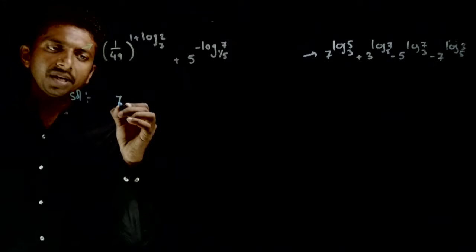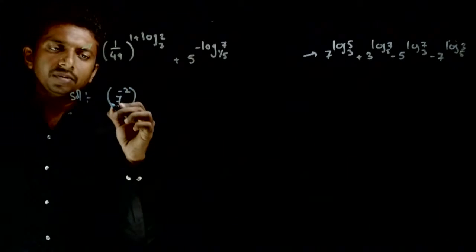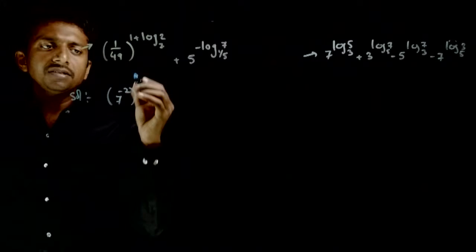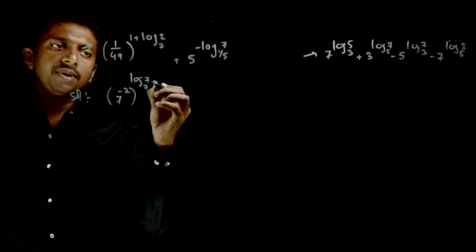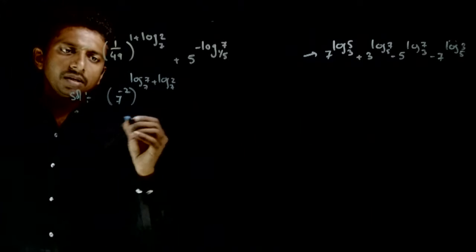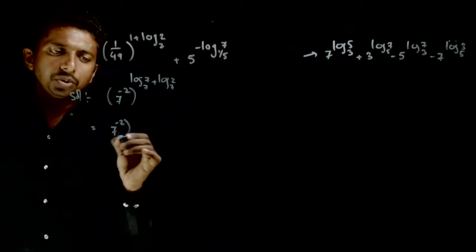49. 1 by 49 can be written as 7 power minus 2. And upar vi base 7 ka hi rikheni. So 1 can be written as log 7 to the base 7 plus log 2 to the base 7. That is equal to 7 power minus 2.